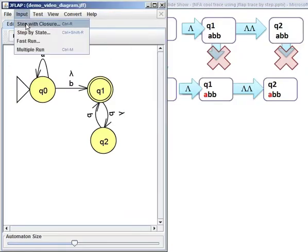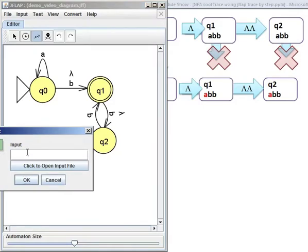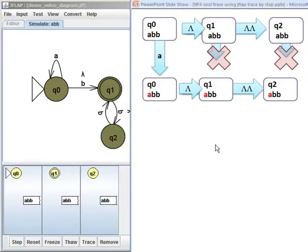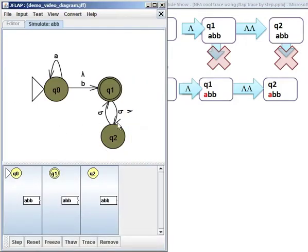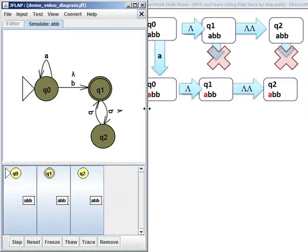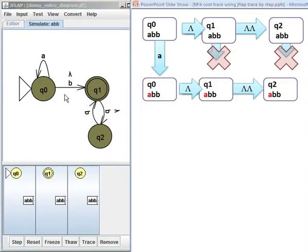And if we actually do the step with closure, and I say I want to do A, B, B as my string, you can see immediately we start with three different options. Let me shrink this down a little bit just so you can see everything. Immediately we start with three possible options. We could be at state Q0, we could be at state Q1, we could be at state Q2. In all three cases, we haven't processed anything yet.